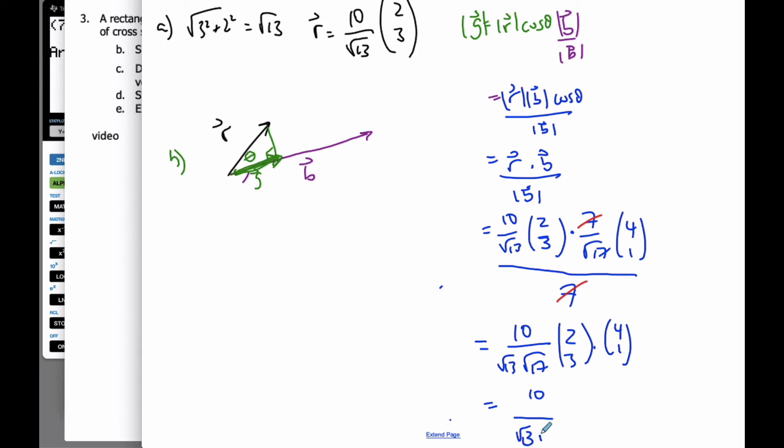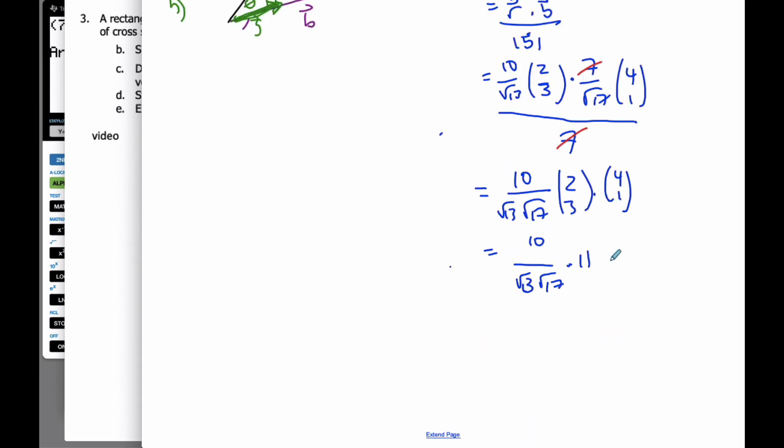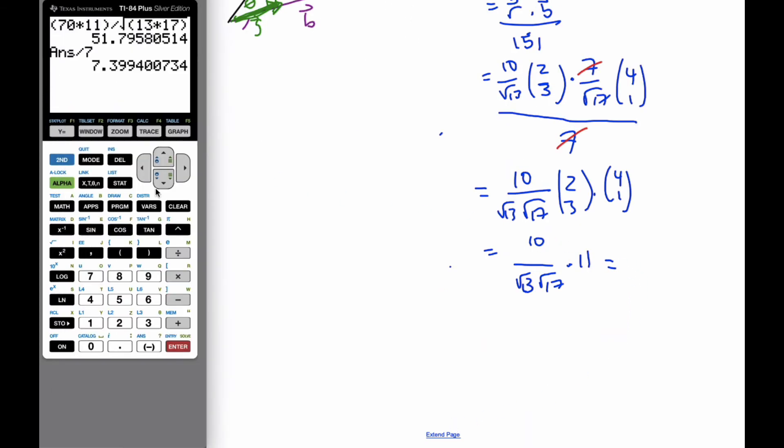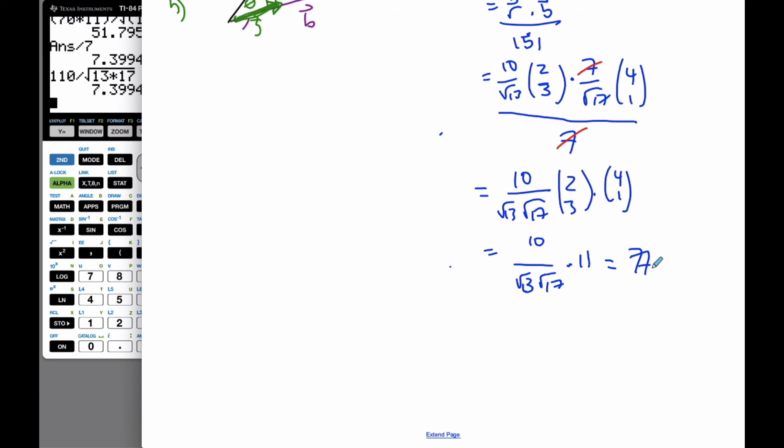If I do the actual dot product, I get 8 plus 3 is 11. And if I do this calculation, I'm going to end up with 110 divided by the square root of 13 times 17, which will give me 7.40 to 3 significant figures with the 0 there.